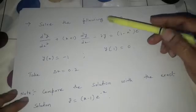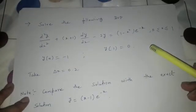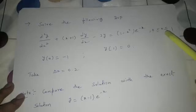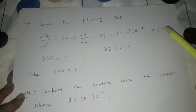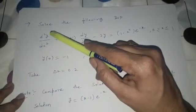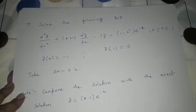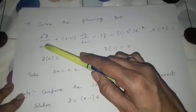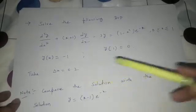Let us solve this boundary value problem: d²y/dx² + (x+1)dy/dx − 2y = (1 − x²)e^(−x), where x lies between 0 and 1. The lower boundary value is x=0 and the upper is x=1. Since the order of the differential equation is 2, we need two boundary conditions: y(0) = −1 and y(1) = 0. We are asked to take Δx = 0.2.